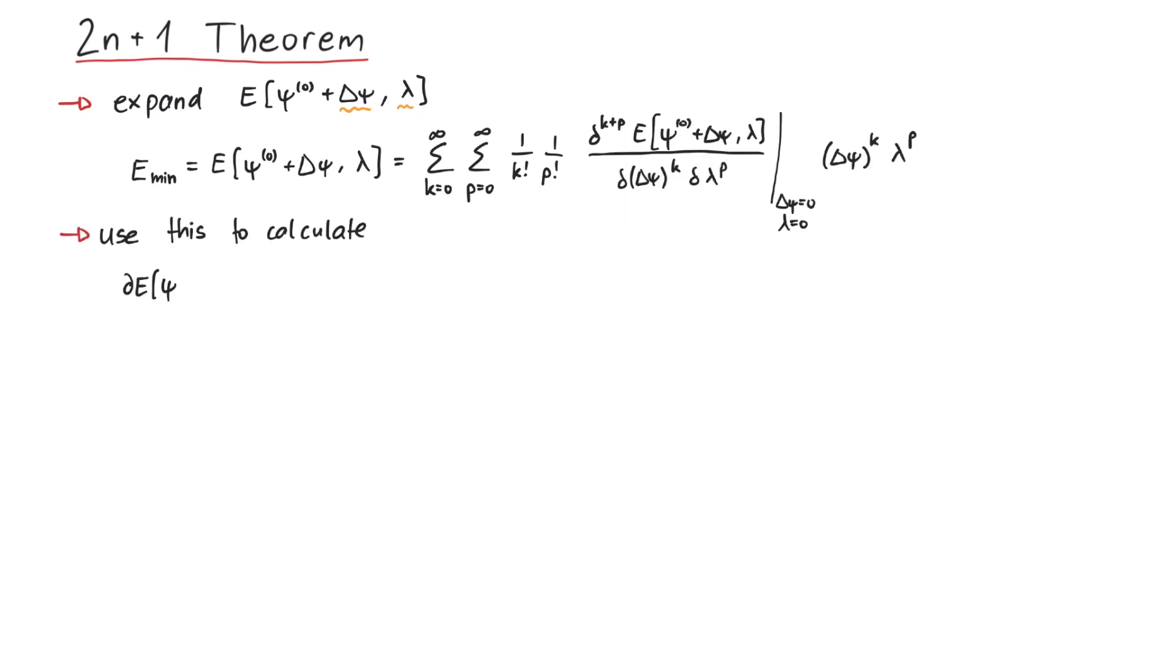That is, we take the derivative with respect to delta psi and set it to zero. Note that the sum over k now starts at 1 and that we have a k minus 1 factorial here. In order to make it a bit easier to read, we abbreviate all of this with fp.